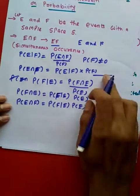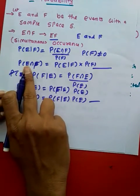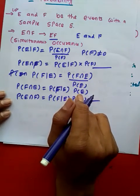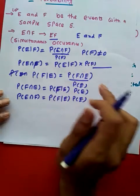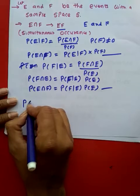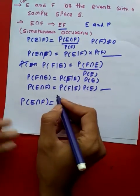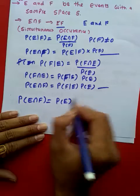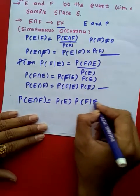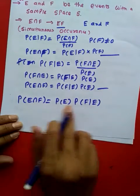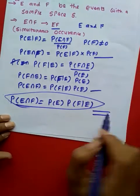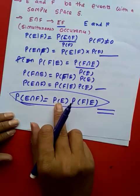So as you can see, now we have two equations for P of E intersection F through which I can denote it. Once again, I am just summarizing it. P of E given F can be given as P of E multiplied with P of F given E. So this is a multiplication rule for probability. This equation is required for various kinds of numericals.